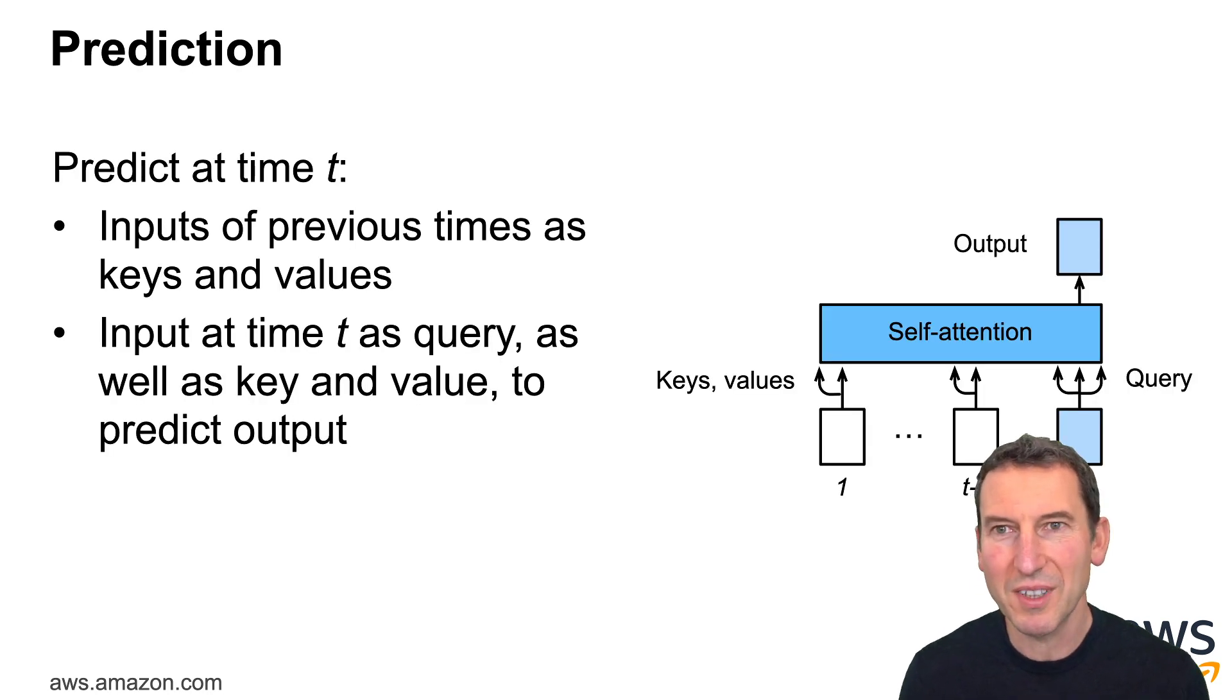Now, for prediction, the key point is you take the inputs, outputs of the previous times as keys and values. You also take the outputs that you've generated so far, and then you're using where you are right now with your state as the query to predict the next output. In doing so, you get a mechanism that is, while not entirely parallel because you still have a sequential decoding process, but at least for the encoder, you have something that works reasonably well. By now, basically all meaningful sequence models have switched to transformers sooner or later, because they work really well.